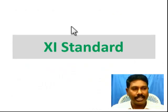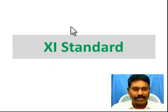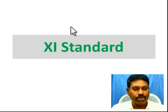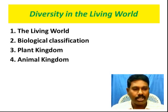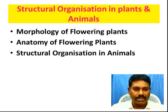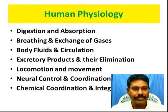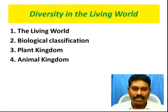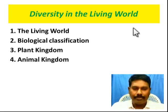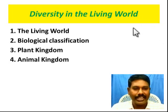Here, we are going to have the 11th standard topics. How do we prepare? In the 11th standard, there are totally 5 units. One is diversity in the living world, that is in plants and animals. Three is cell structure and functions. And four are plant physiology and human physiology. So there are 22 chapters. How do we cover these 22 chapters? You can rock in the NEET exam.